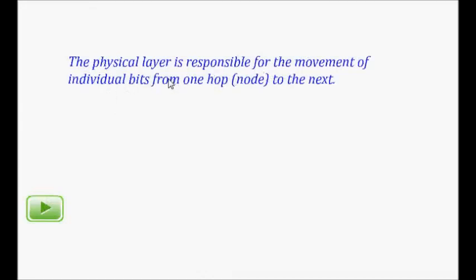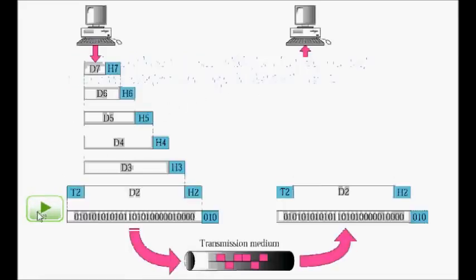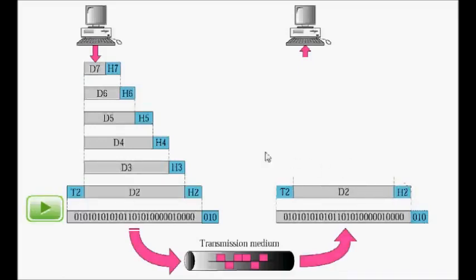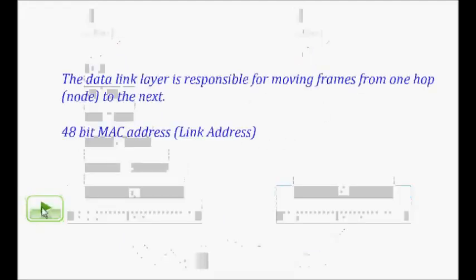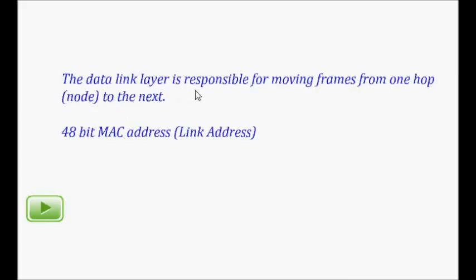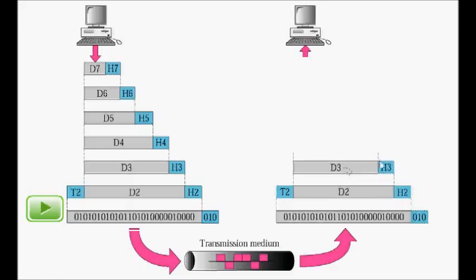The physical layer is responsible for movement of individual bits from one hop node to the next, sending 0s and 1s without caring about the overall data structure. The data link layer uses the MAC address — a 48-bit address — to determine where to send the data for the next hop, and is responsible for moving frames from one hop to the next. The network layer checks the source and destination IP addresses, and the transport layer checks the port number to determine which process to deliver the packet to.